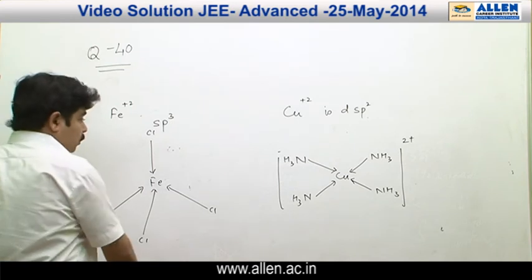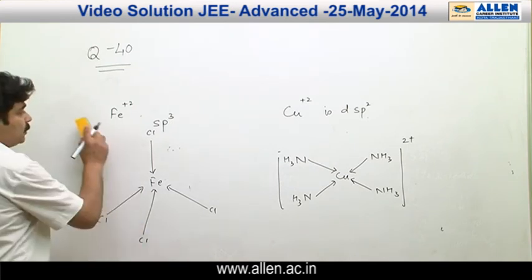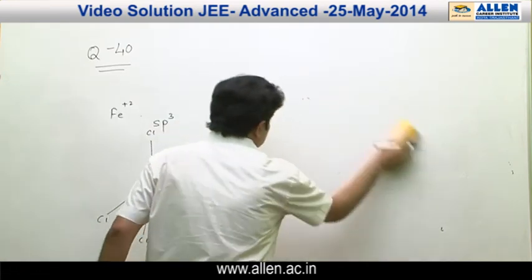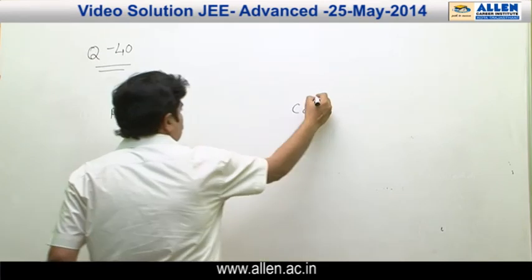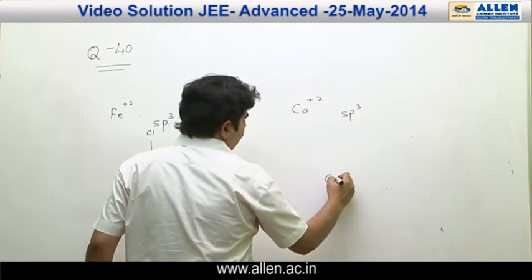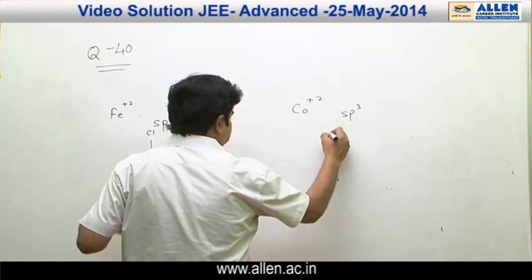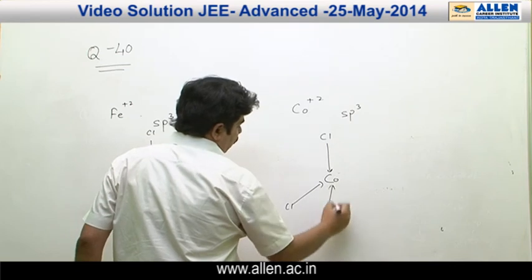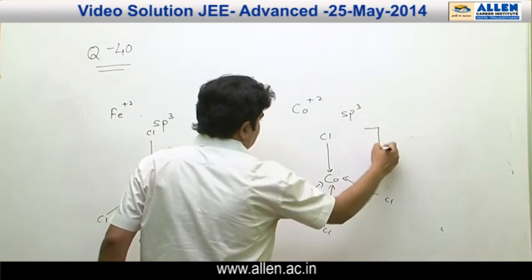Similarly, for cobalt tetrachloride (CoCl₄²⁻), the hybridization of Co²⁺ is SP³ due to the presence of a weak field ligand, and its geometry is tetrahedral.